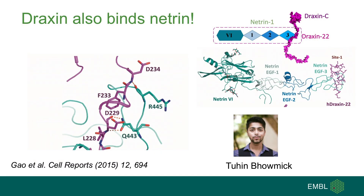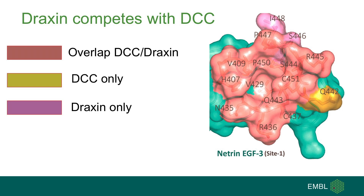Another biophysical study by the Solner lab at Tübingen University reported a direct interaction between Netrin and Draxin. This led Tuhin Bhomik from the Myers lab to determine the crystal structure of the complex between Netrin and a fragment of Draxin that is unstructured but very conserved and bound to Netrin. The structure demonstrates that Draxin binds to Netrin in the area that covers one of the DCC binding sites. Using Avexis binding assays and mutagenesis, we confirmed that the interactions shown in the structure are relevant.